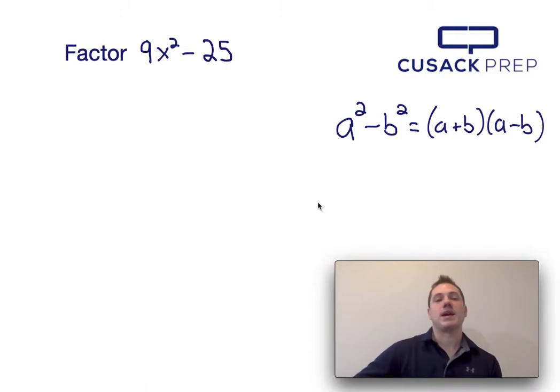So what I have to do is compare this 9x squared minus 25 equation to this a squared minus b squared equation. And what I notice is that a squared and 9x squared are in the same position, and b squared and 25 are in the same position.